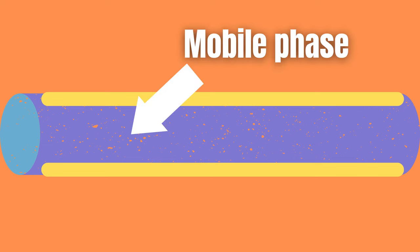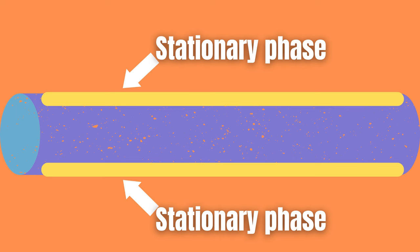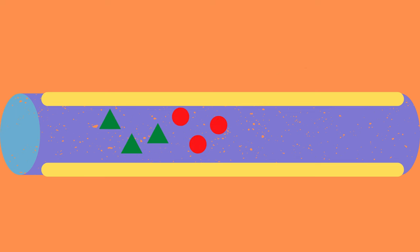Then the molecules are separated based on how they interact with the stationary phase inside of the column. Like separates like. Therefore nonpolar columns are good for separating nonpolar analytes and polar columns are good for separating polar analytes.